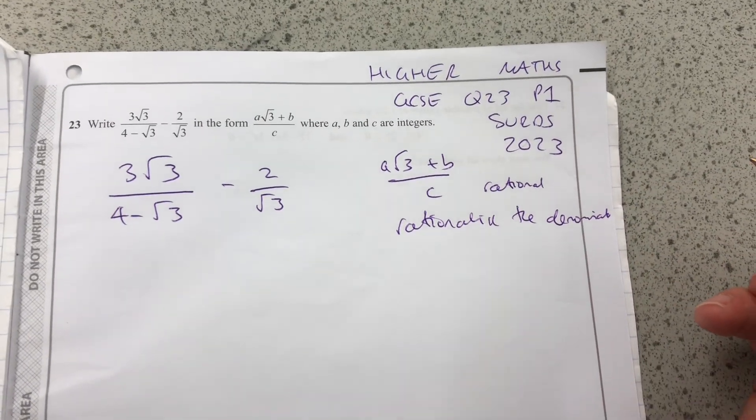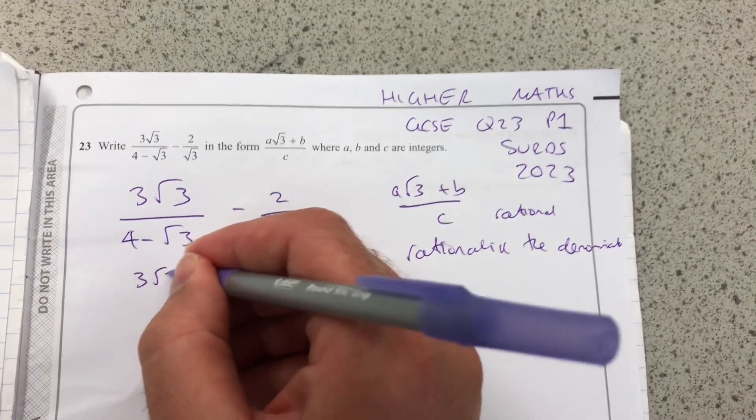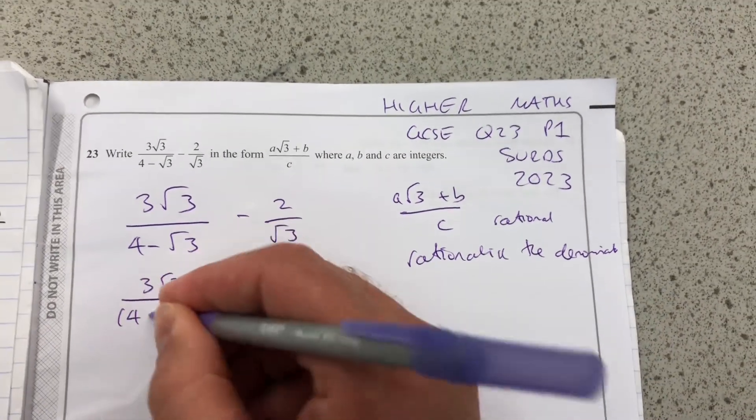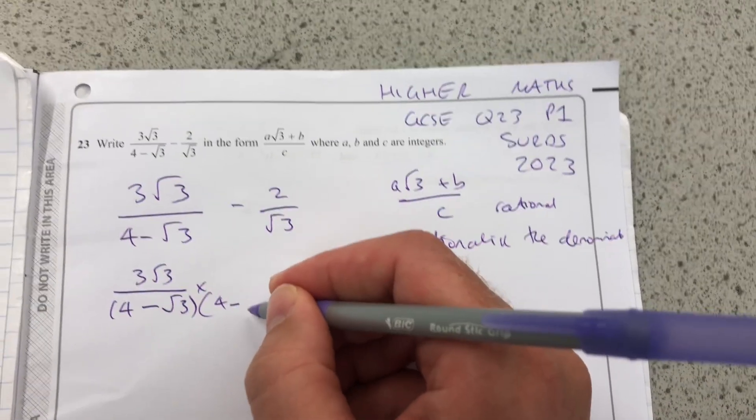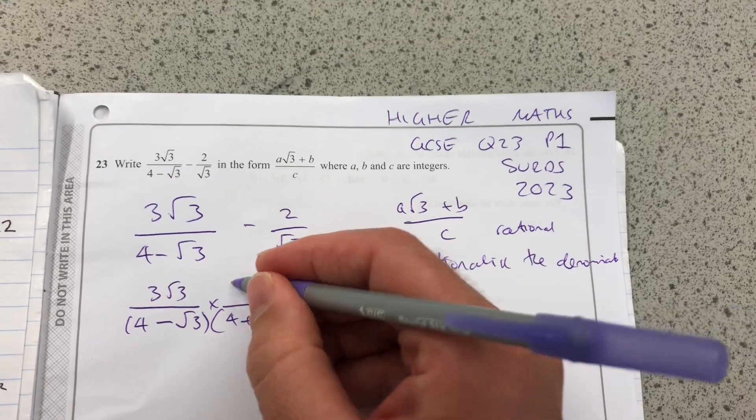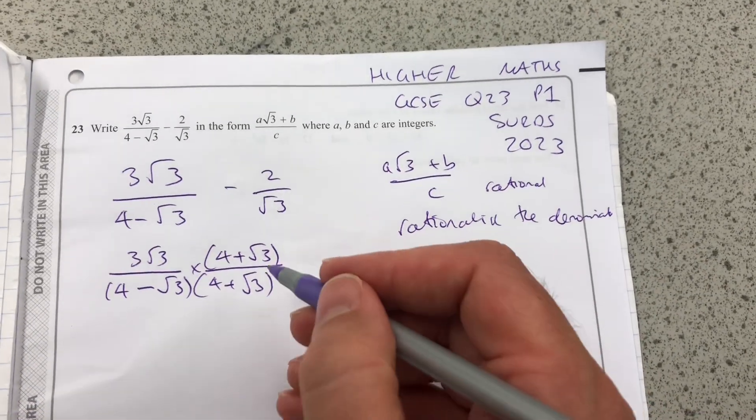So to do that, in each case, I'm going to multiply 3 root 3 over 4 minus 3 root 3 by, kind of its conjugate, changing the sign of that surd. But I must make sure that the numerator is also multiplied, so that I'm multiplying it, in effect, by 1.